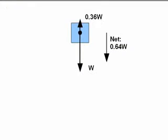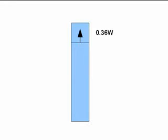In other words, once it starts falling, the upward resistive force is only 36% of the weight of the falling section of the building. So far, so good.